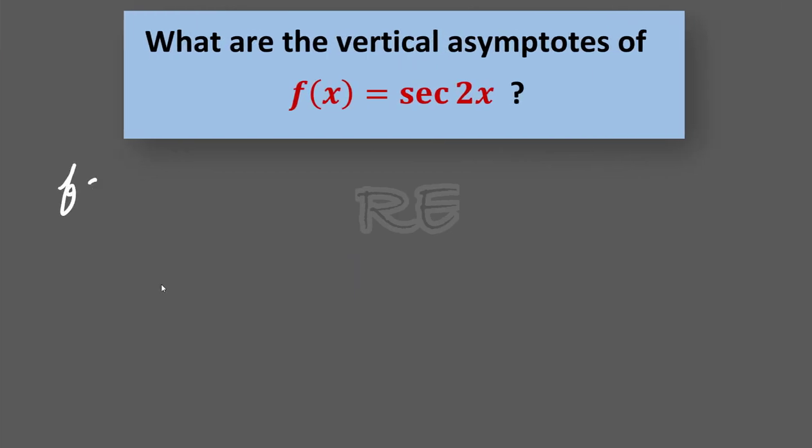What are the vertical asymptotes of f of x equal to secant 2x?